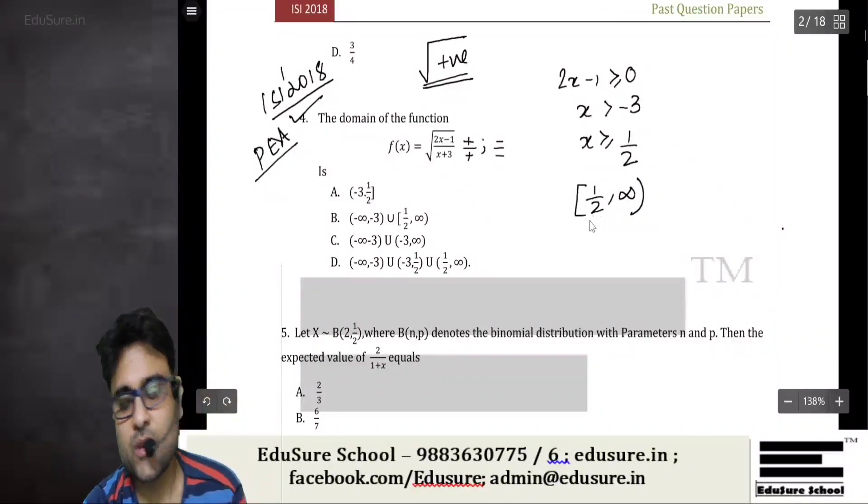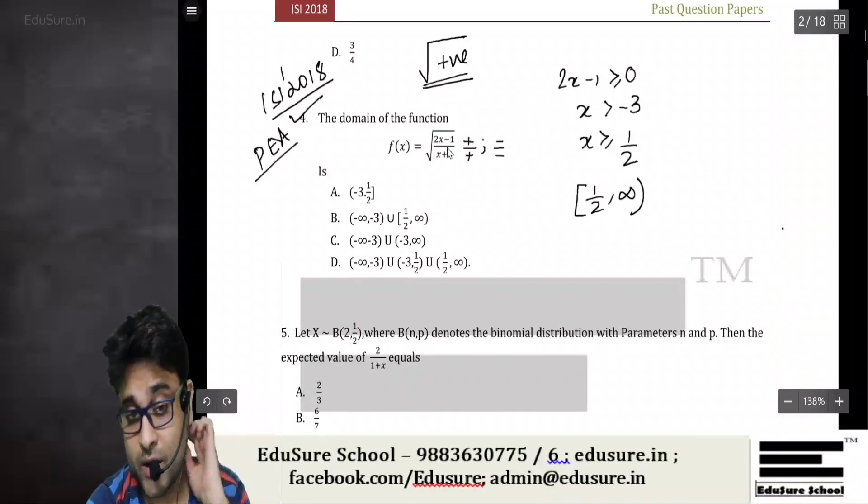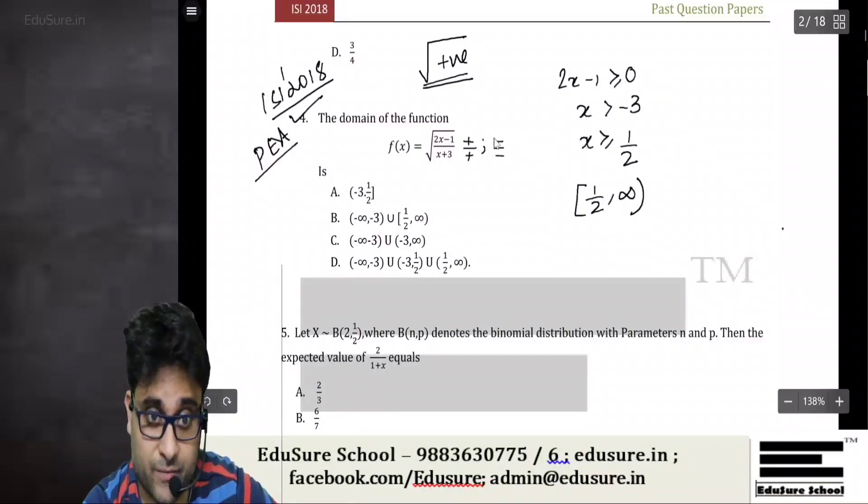So in this interval [1/2, ∞), both the numerator and the denominator will be positive.